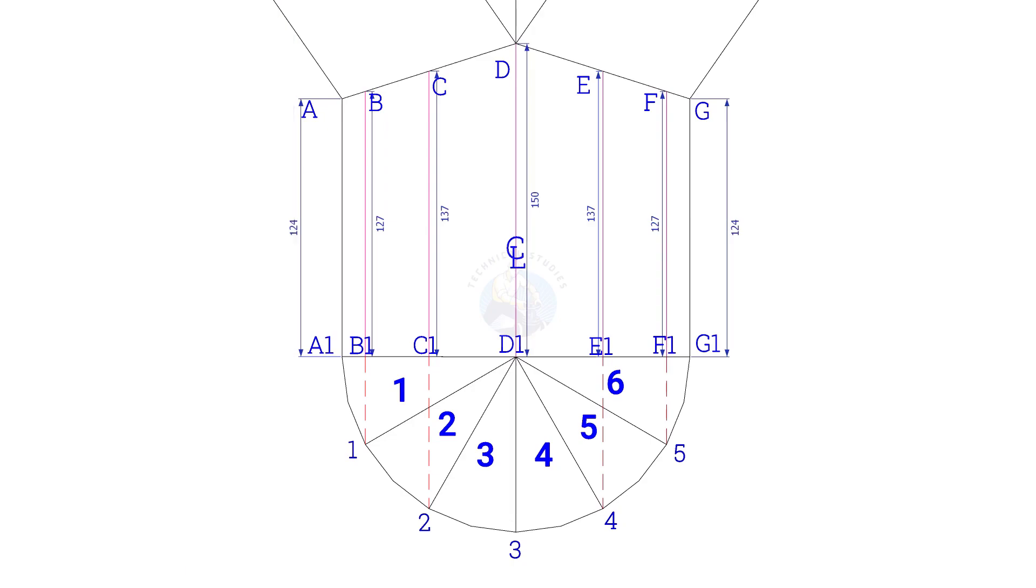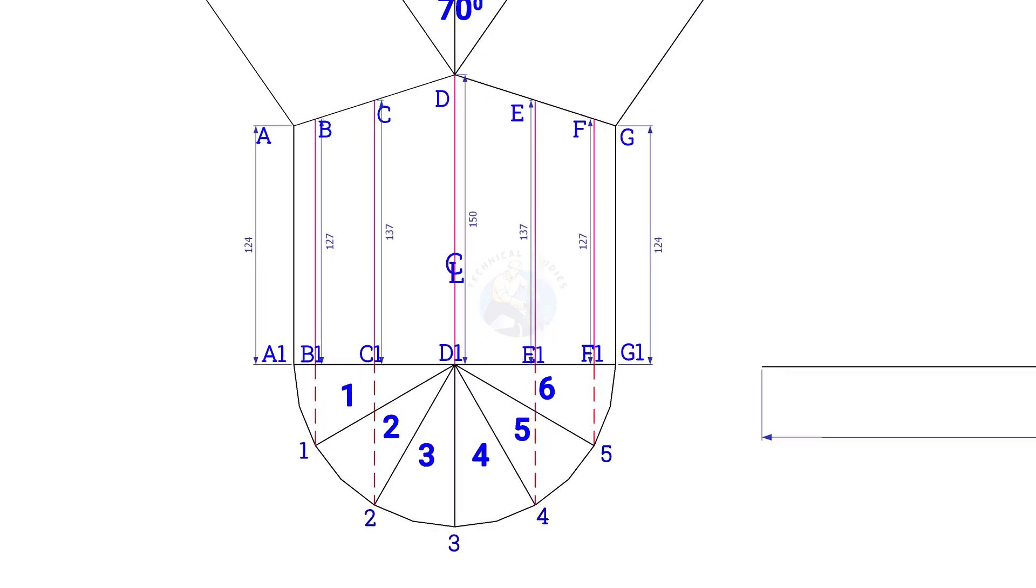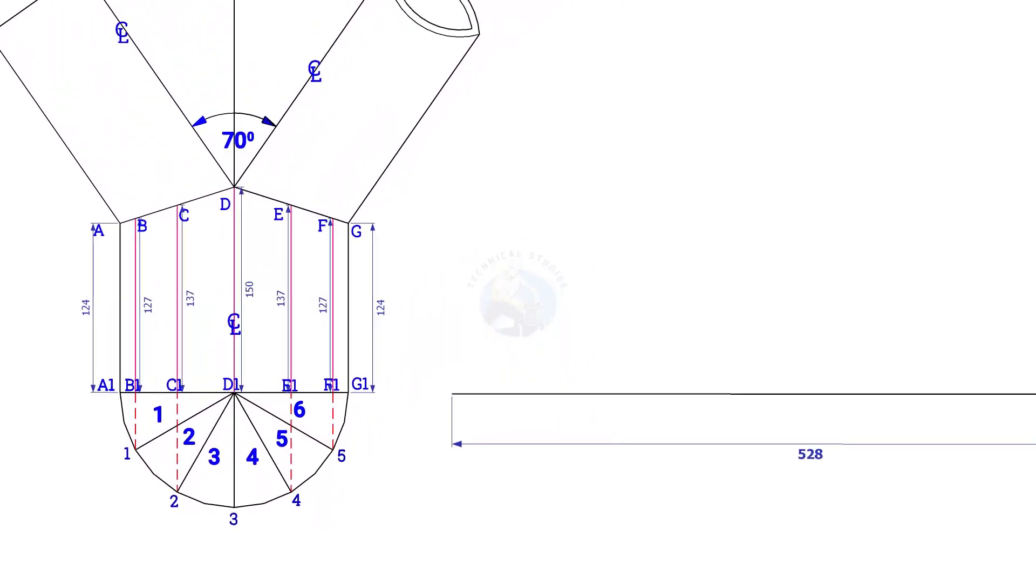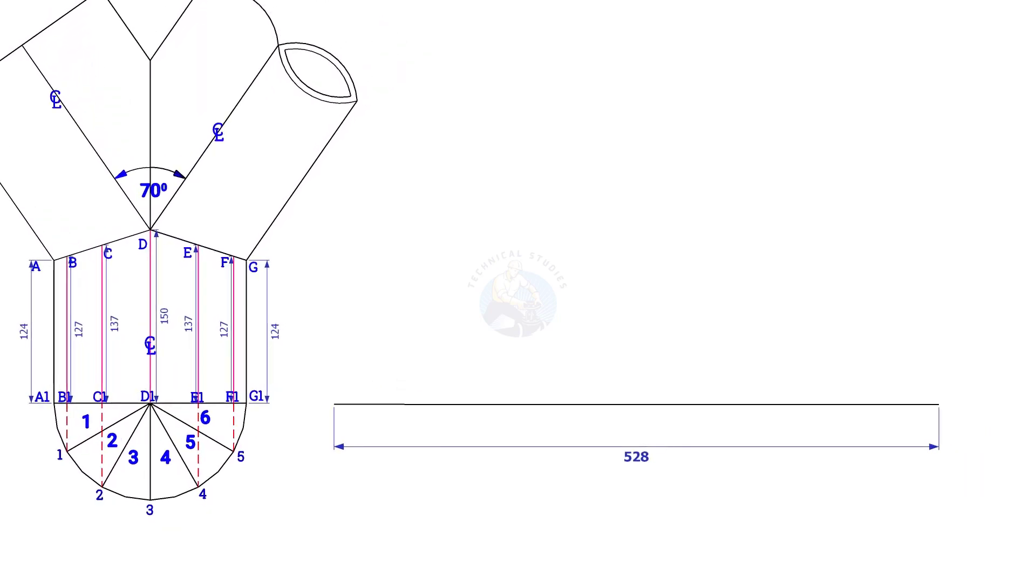The circumference is nearly 528mm. Draw a 528mm long line. Since we divided the half circle into 6 parts, divide the line into 12 equal parts.